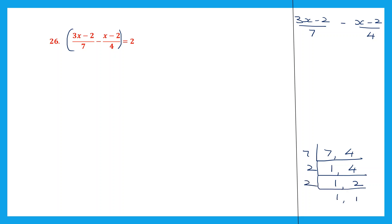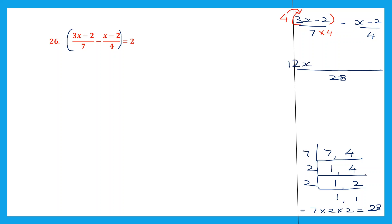So the LCM is 7 into 2 into 2. 7 2s are 14, 14 2s are 28. So we're going to use 28 as a common denominator. Now 7 4s are 28, so I have to multiply this whole thing by 4. First I multiply 4 into 3x: 4 3s are 12, so I get 12x. Then I multiply 4 into minus 2: minus 4 2s are 8.